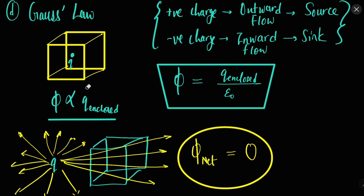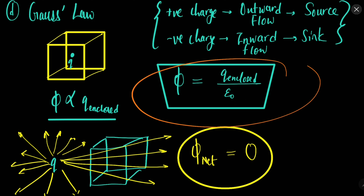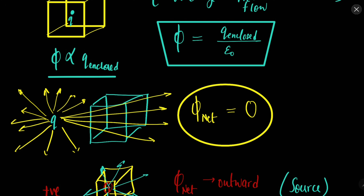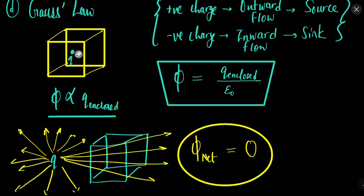Once the proportionality is replaced by equality, the constant epsilon naught is introduced. So Gauss law states: the flux or flow of electric field through a region is equal to the charge enclosed divided by epsilon naught. More the charge enclosed, more will be the flux. And importantly, if the charge inside is zero, then the flux will be zero.